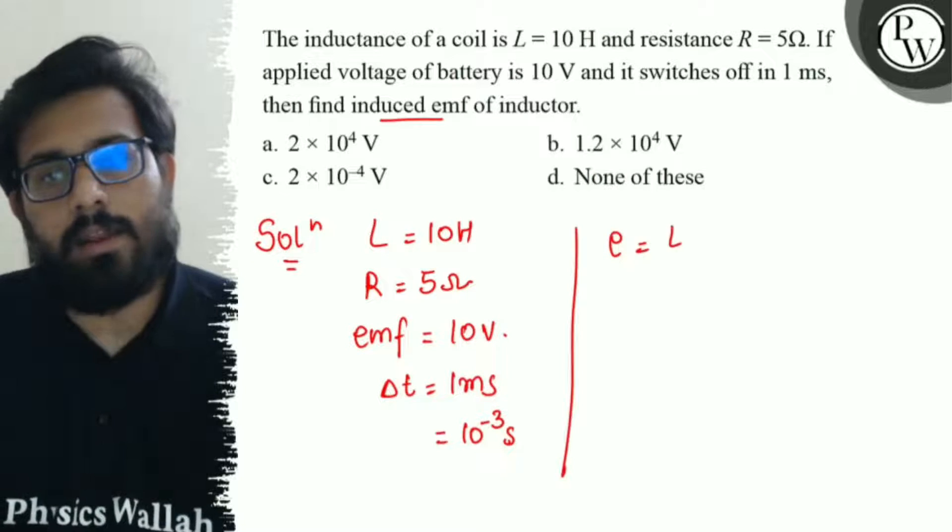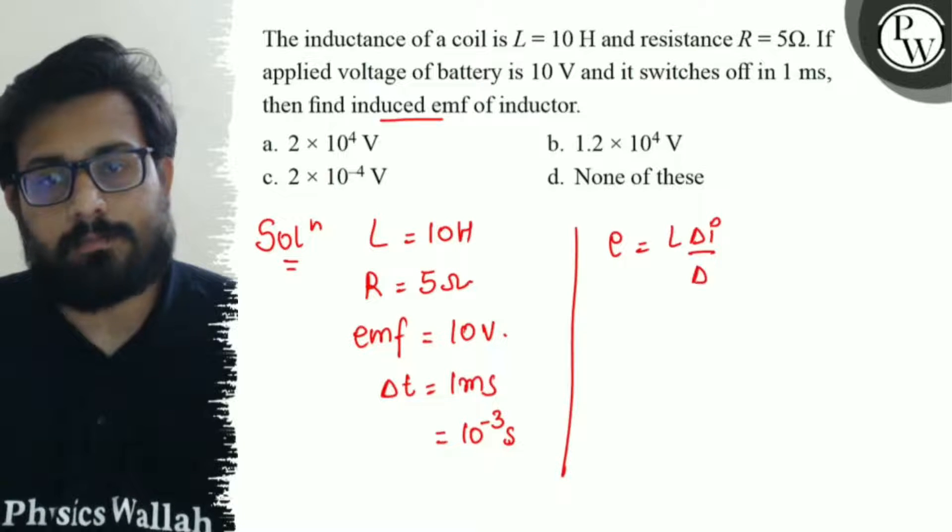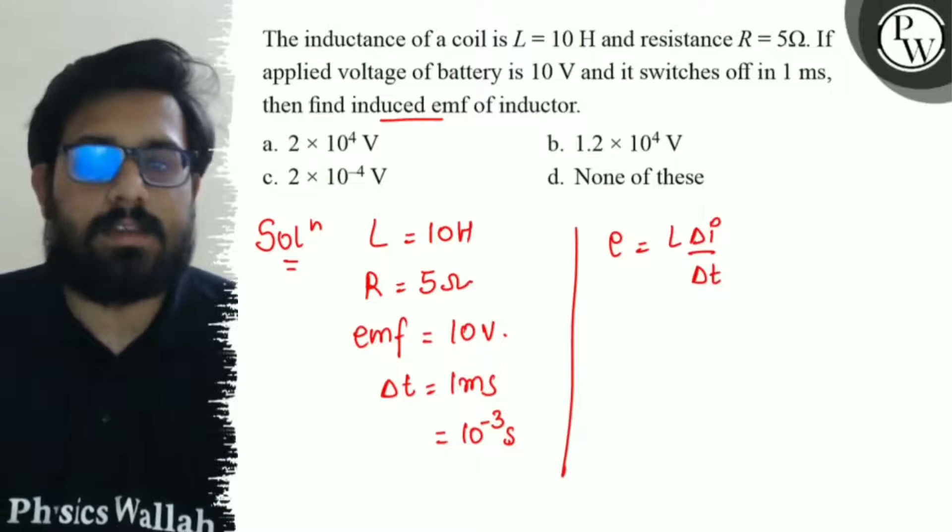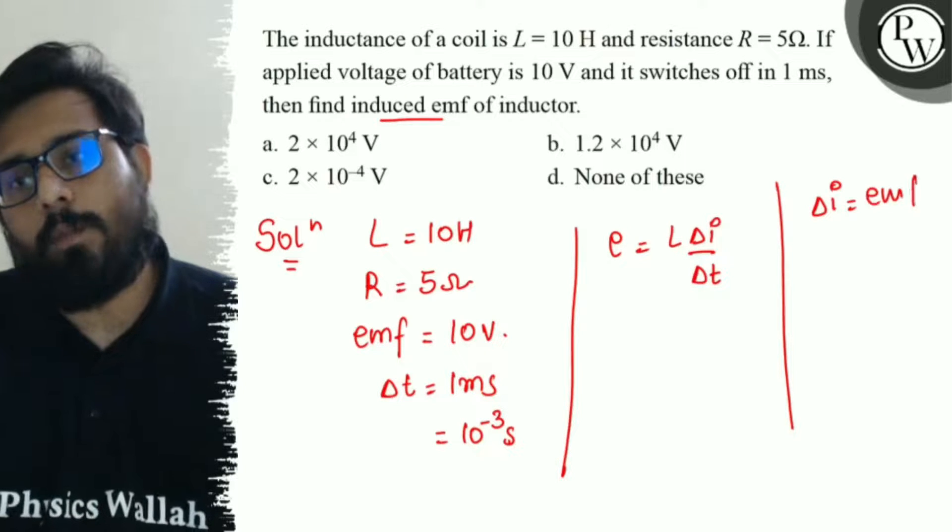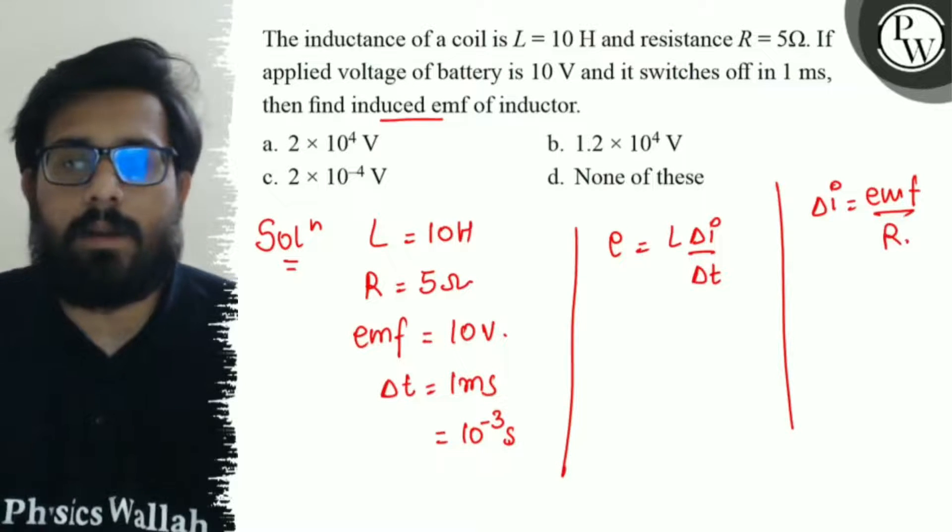Induced emf equals L into delta I by delta t. The point is delta I. We know that delta I equals emf upon resistance for the battery.